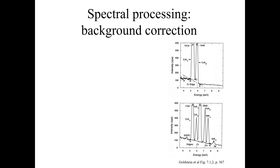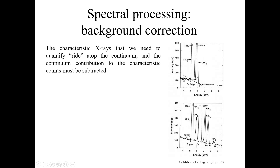First, we will have some discussion on spectral processing, specifically about background correction. Here you can see two spectra. The first spectrum shows the characteristic X-rays that we need to quantify, sitting atop the continuum. The continuum distribution contribution to the characteristic counts must be subtracted.